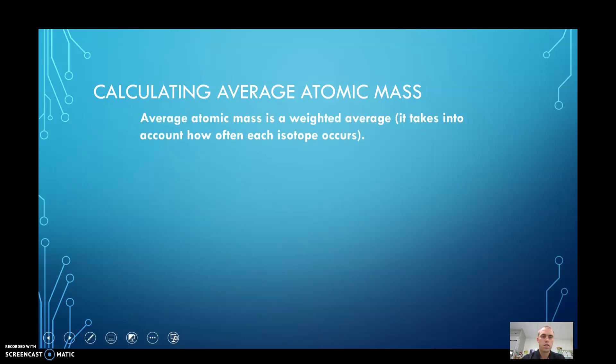The average atomic mass is defined as a weighted average. In some of your classes, you might have your grades calculated as a weighted grade, where your tests are worth a different amount of points than your homework, which is worth a different amount of points than your quizzes. That's how my class is done. The weighted average will take into account the abundance of each isotope in nature, how often you would come across each different isotope.